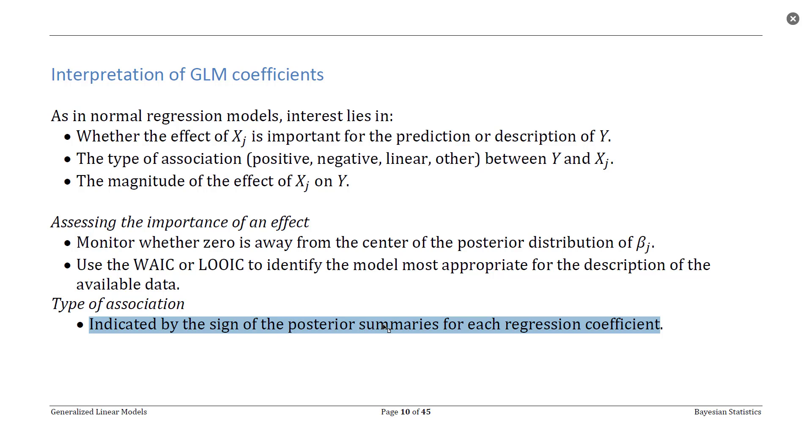So I want to be careful here. Sometimes our posterior distributions have infinite support, so we can't say that the posterior distribution is entirely positive or entirely negative. But is the bulk of the posterior distribution positive? Is the bulk of the posterior distribution negative? These are the kind of things that we look at when we're trying to decide the type of association between a regression coefficient and our response variable.